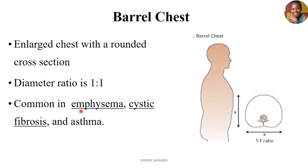In barrel chest, the anterior-posterior diameter increases to equate with the transverse diameter, so both diameters become equal, giving a rounded cross-section appearance. If you look at this chest, the anterior-posterior diameter and the transverse diameter are equal in ratio, producing that rounded barrel-like appearance.